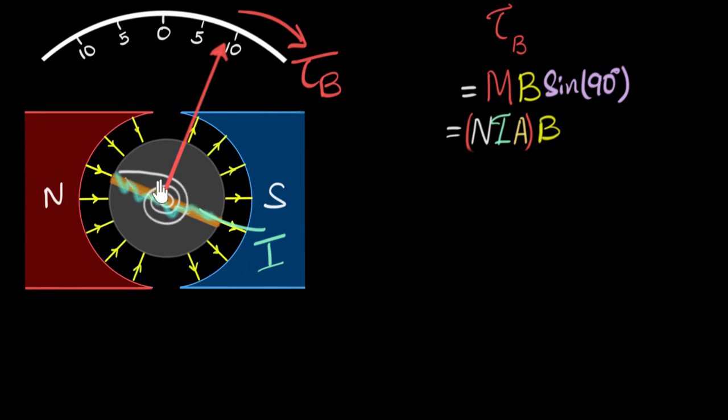And at the same time, we have coil springs which don't like to get twisted. So as they get twisted, they try to untwist, producing a counter torque in the opposite direction. And this counter torque is found to be proportional to the angle through which this coil twists. And at equilibrium, the two torques are exactly equal to each other.